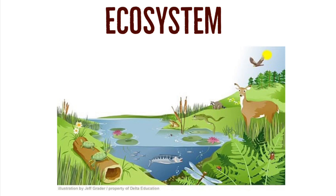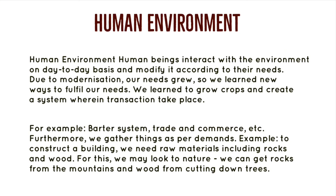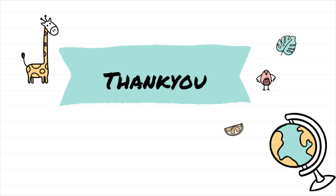The last topic for the day is human environment. Human beings interact with the environment on a day-to-day basis and modify it according to their needs. Due to modernization, our needs grew, so we learned new ways to fulfill them — we learned to grow crops and created systems for transactions such as the barter system, trade and commerce. Furthermore, we gather things as per our demand; for example, to construct buildings we need raw materials including rocks and wood, so we get rocks from mountains and wood by cutting down trees. That's a wrap for today's session — thank you for joining, take care, bye.